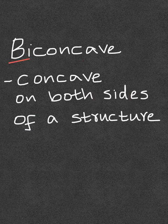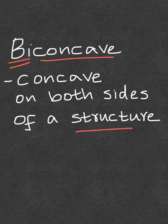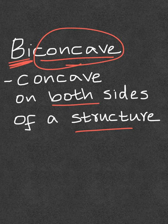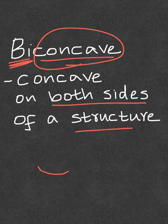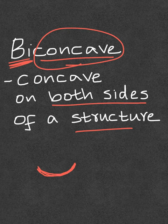The term biconcave means the structure has a shape which makes it concave on both sides. Concave is the term used to describe a structure which has an outline or surface that is curved towards the inside. So this is how the concave shape looks like - the surface that is curved towards the inside.